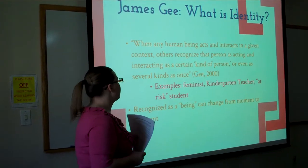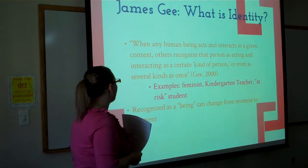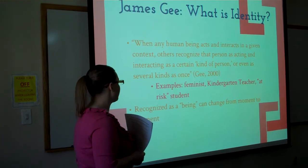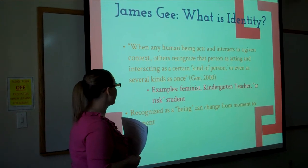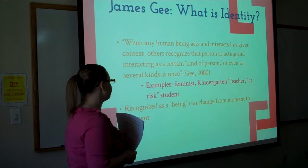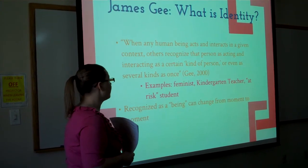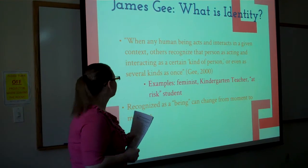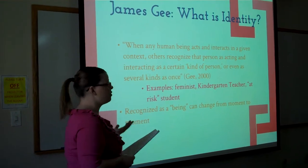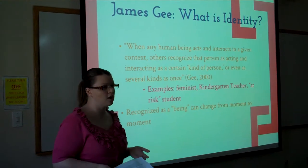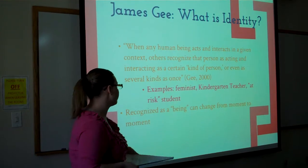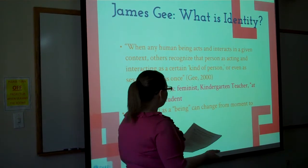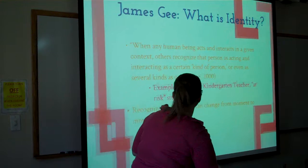Gee defines identity as: when any human being acts and interacts in a given context, others recognize that person as acting and interacting as a certain kind of person, or even as several kinds at once. For example, that could be a feminist, a kindergarten teacher, or what some people might call an at-risk student. And these identities can change within different contexts.